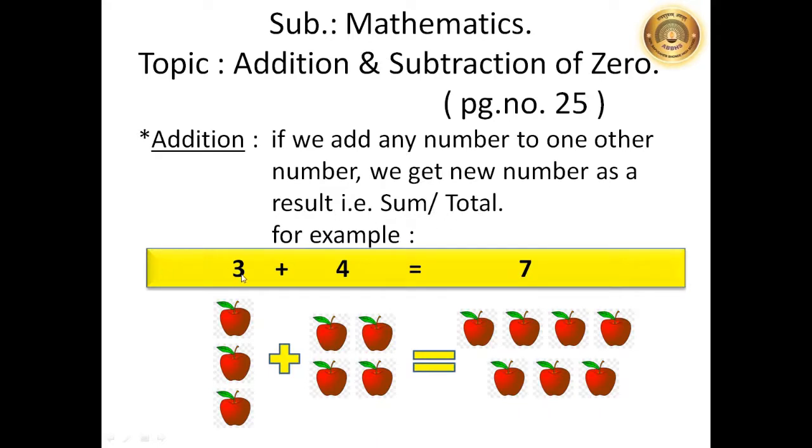For example, 3 plus 4 is equal to 7. Here are the 3 apples. And also, more 4 apples we have. That is, 1, 2, 3 and 4.